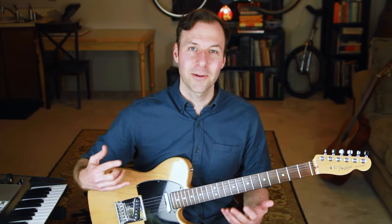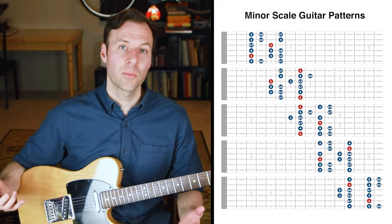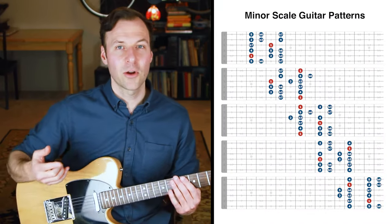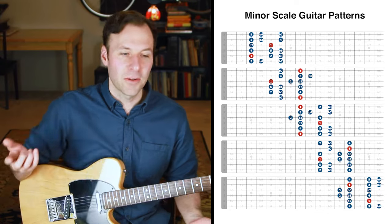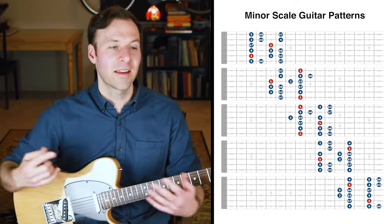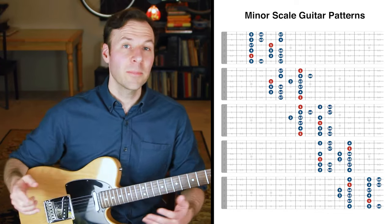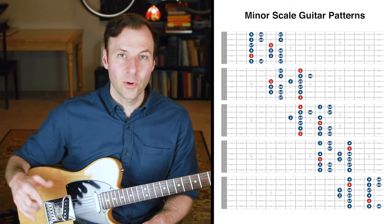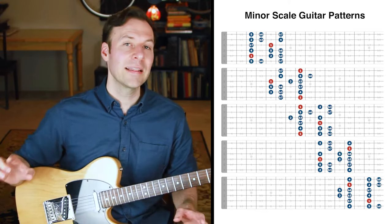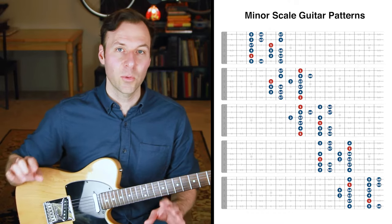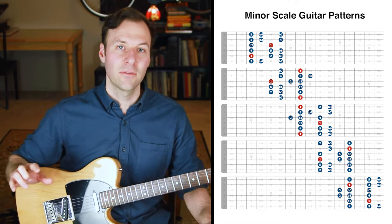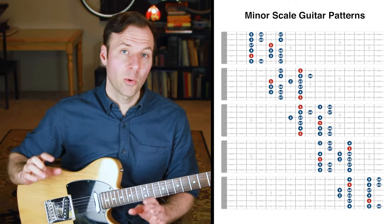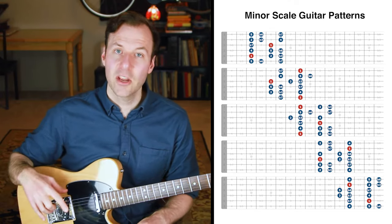Here are the five natural minor scale guitar patterns. We want to know all of these equally well. These are most often called patterns, but they're also called scale forms, scale positions, or scale shapes — those are all interchangeable. At the very least we want to make sure we're comfortable with these five particular minor scale guitar patterns. All five patterns here are written as the C natural minor scale, but you can move them around to play in any minor key.